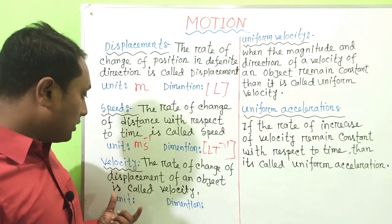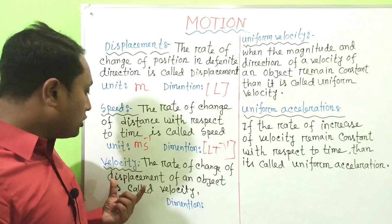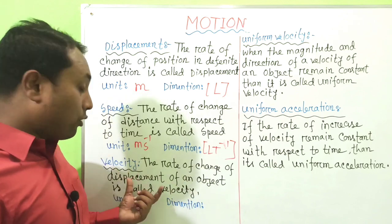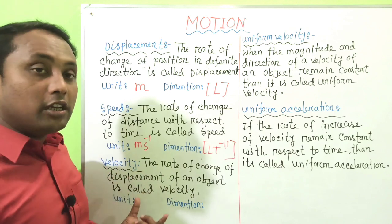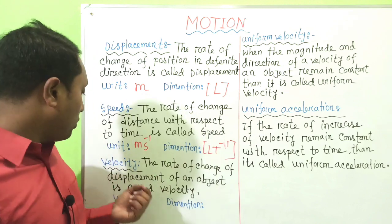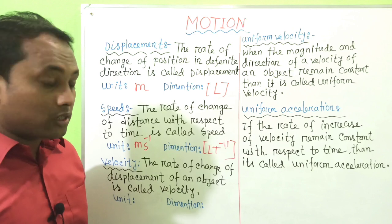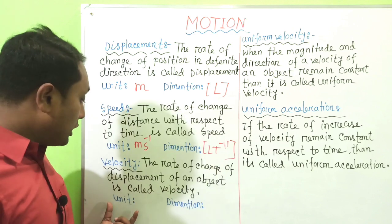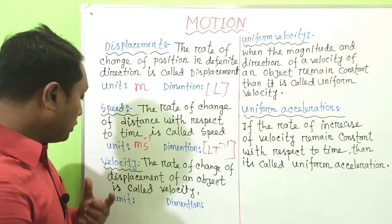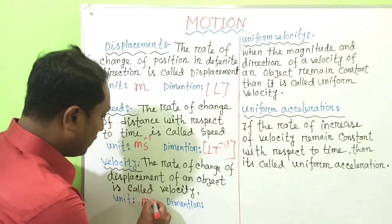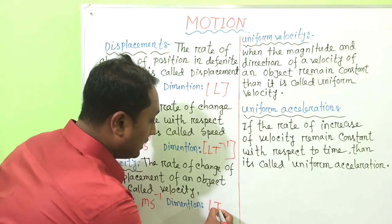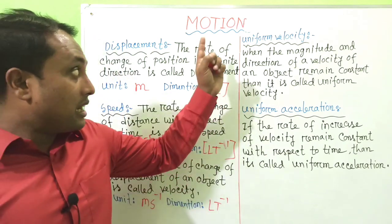The next definition is Velocity. The rate of change of displacement of an object is called velocity. Velocity depends on displacement, and since displacement is a vector quantity, velocity is also a vector quantity. The unit of velocity is meter per second, and the dimension of velocity is LT⁻¹.